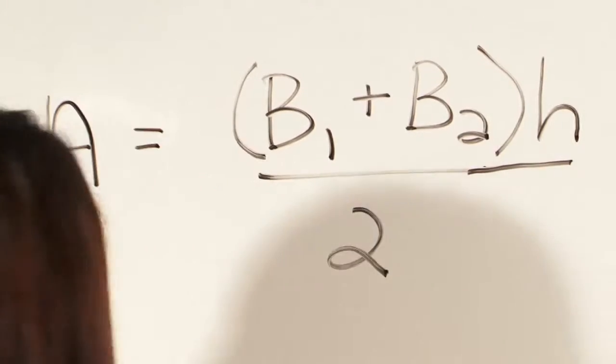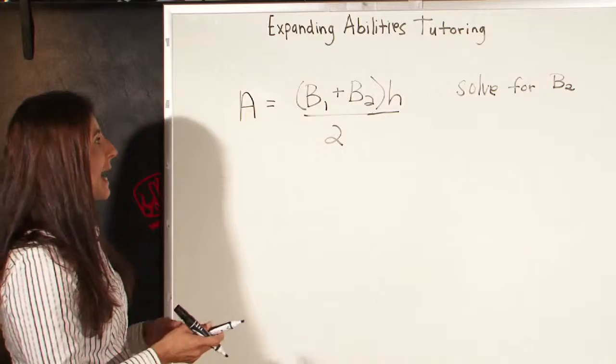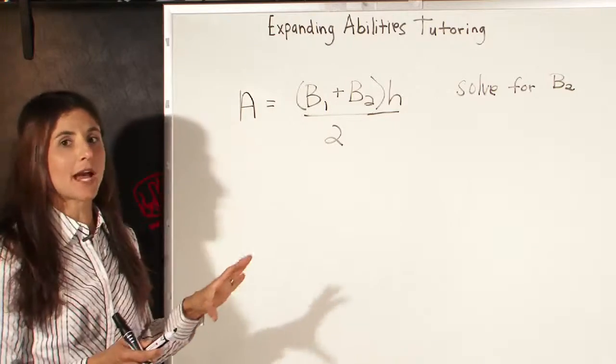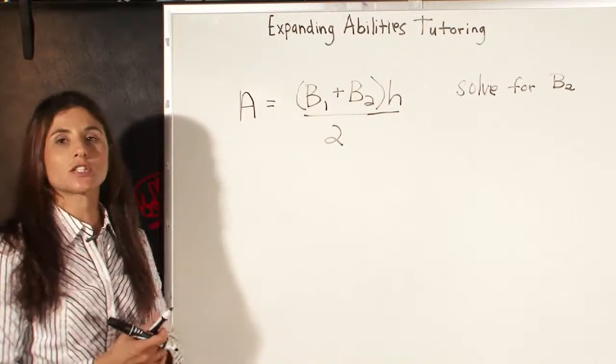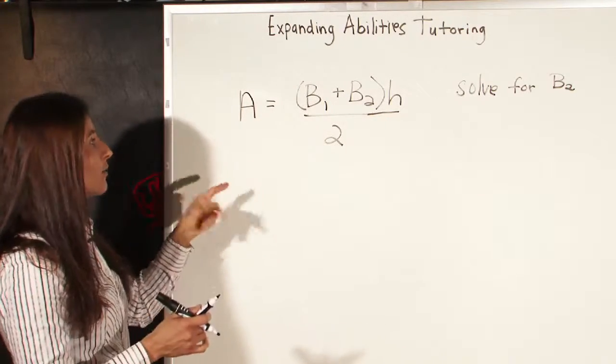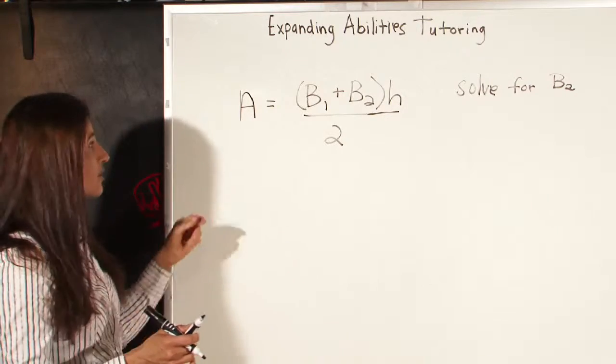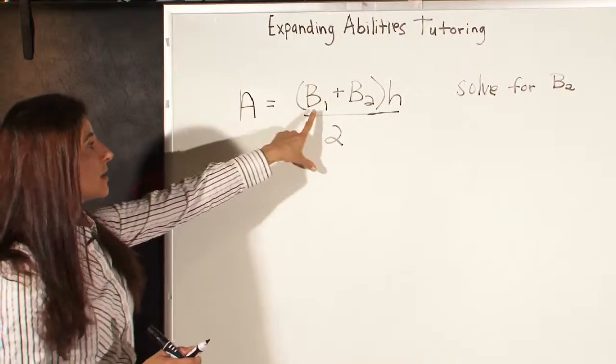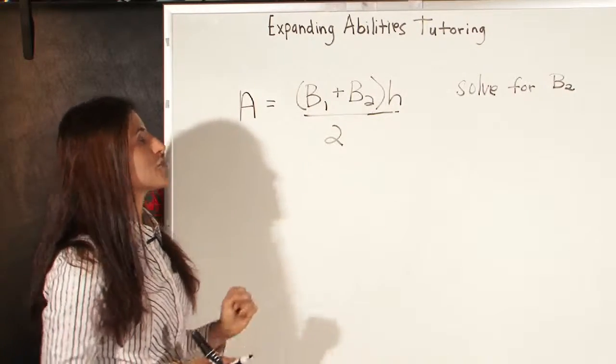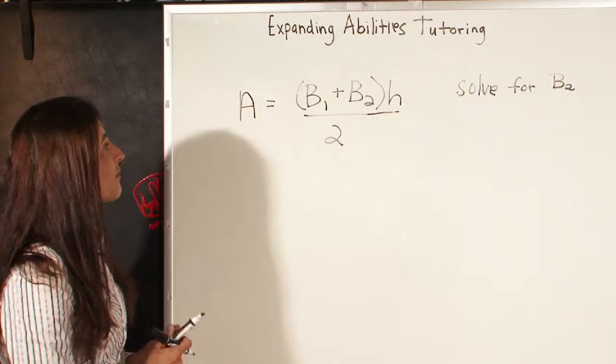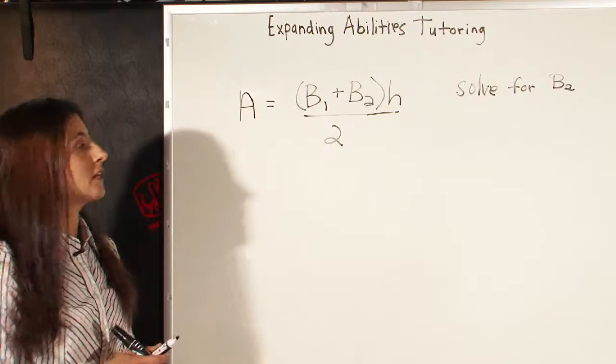This is the equation for the area of a trapezoid, and it is an algebraic equation that describes the relationship between several variables. We have variables, which are letters that represent numbers, and we have A, B1, B2, and H. So we actually have four different variables in this algebraic equation.